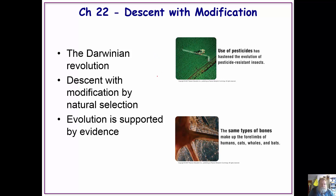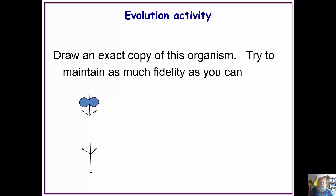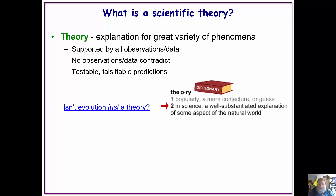What we're talking about with Darwinism is descent with modification — every time you make a copy of something there's probably going to be a change, since it's very difficult to make exact copies. We showed this in class where I had you make an organism and draw it ten times, and there were significant differences after ten times.